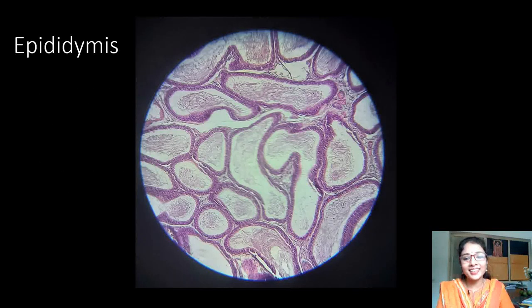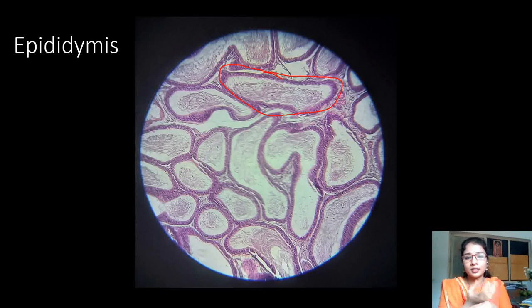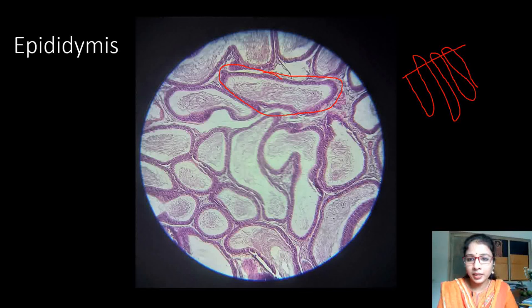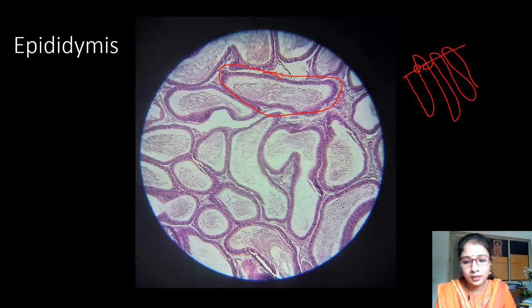The next slide is the epididymis. Epididymis is identified by a tubule-like structure. It is a highly coiled tube, so at any cut section we can see many cut sections of tubules. These are the tubules of the epididymis — a single tube, highly coiled — and this tube is surrounded by a layer of smooth muscle fibers.